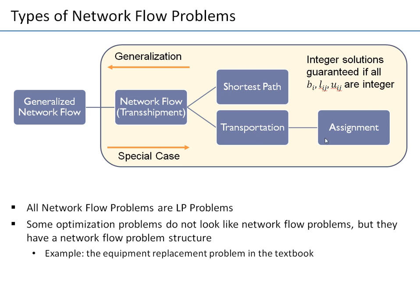Assignment is actually a special case of transportation because it has the same network, except that now not multiple units are transported from every node — from every node we transport one unit, and every sink has one unit of demand. So when assigning workers to jobs, workers are nodes with one unit of supply, jobs are nodes with one unit of demand, and supply and demand are only one everywhere.